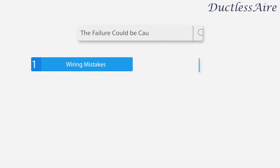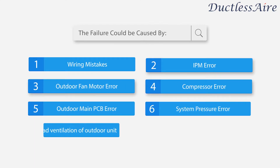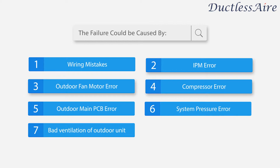The failure could be caused by: 1. Wiring mistakes; 2. IPM error; 3. Outdoor fan motor error; 4. Compressor error; 5. Outdoor main PCB error; 6. System pressure error; 7. Bad ventilation of outdoor units.